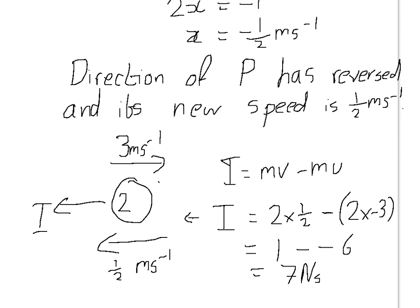Now if you take an impulse in the other direction, you'd have ended up with minus 7 newton seconds.